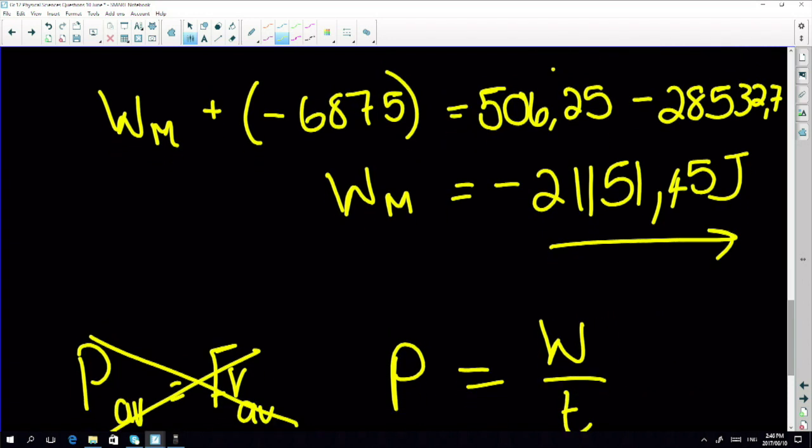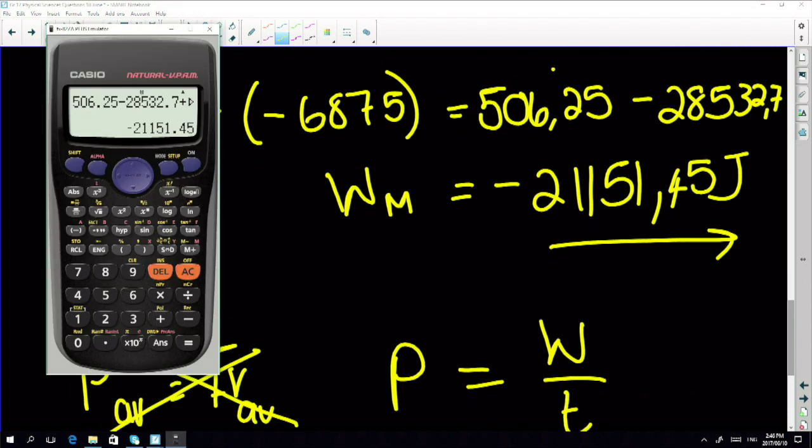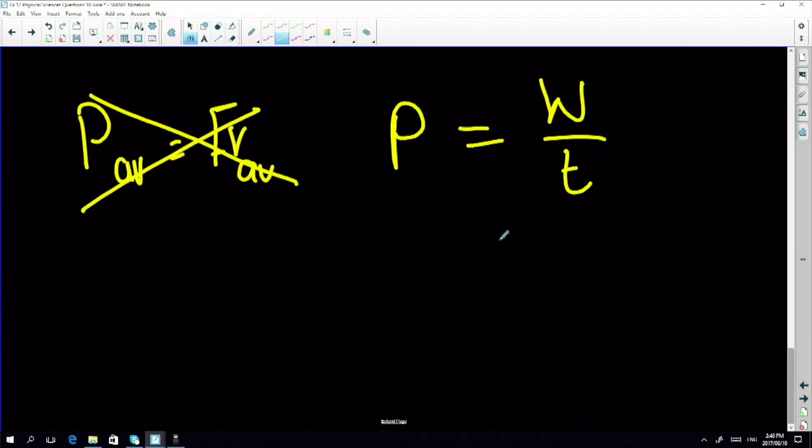Your velocity was not constant. Your velocity increased, there was a change in kinetic energy. I can't use that, but in the question before they asked us to work out the work done by the motor. That means I can use the equation P equals W over t.